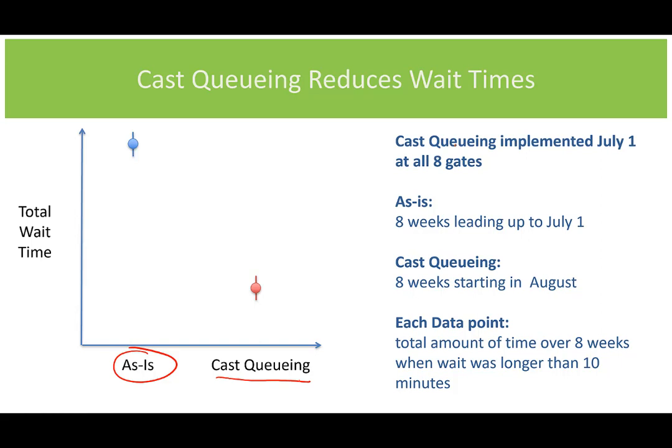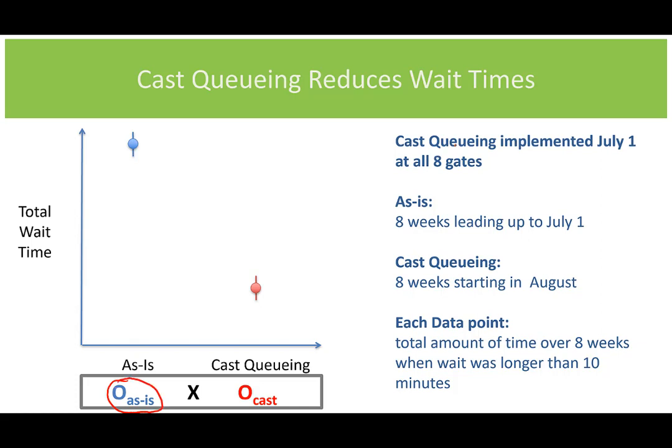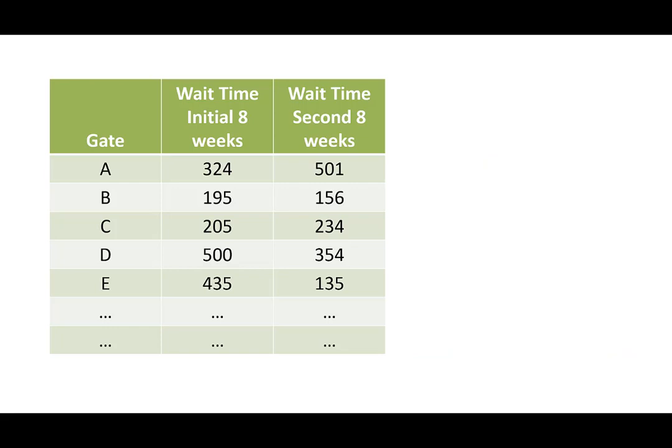They ran it for a month just to get used to it, in between July 1 and August 1. Each data point here is the total amount of time over the eight weeks when the wait time was longer than 10 minutes. The as-is on this plot shows the eight weeks leading up to July 1, whereas the eight weeks starting in August — when they were doing the cast queuing — they recorded data here. A way to represent this using our notation is we have an observation of the current line waiting approach, then the X — what we did — which is implementing cast queuing, and then recording the wait times after.